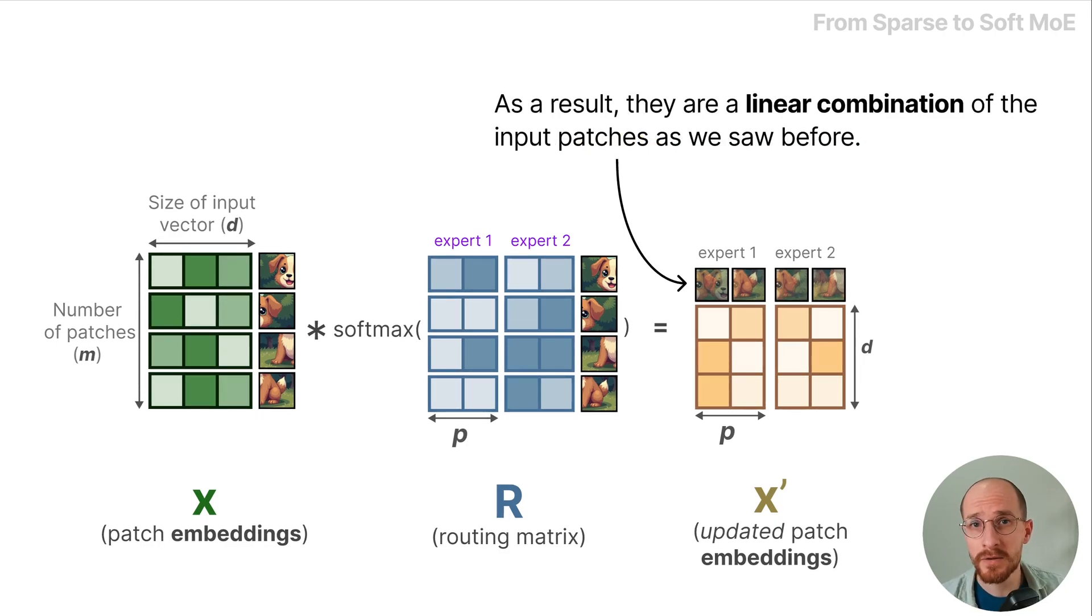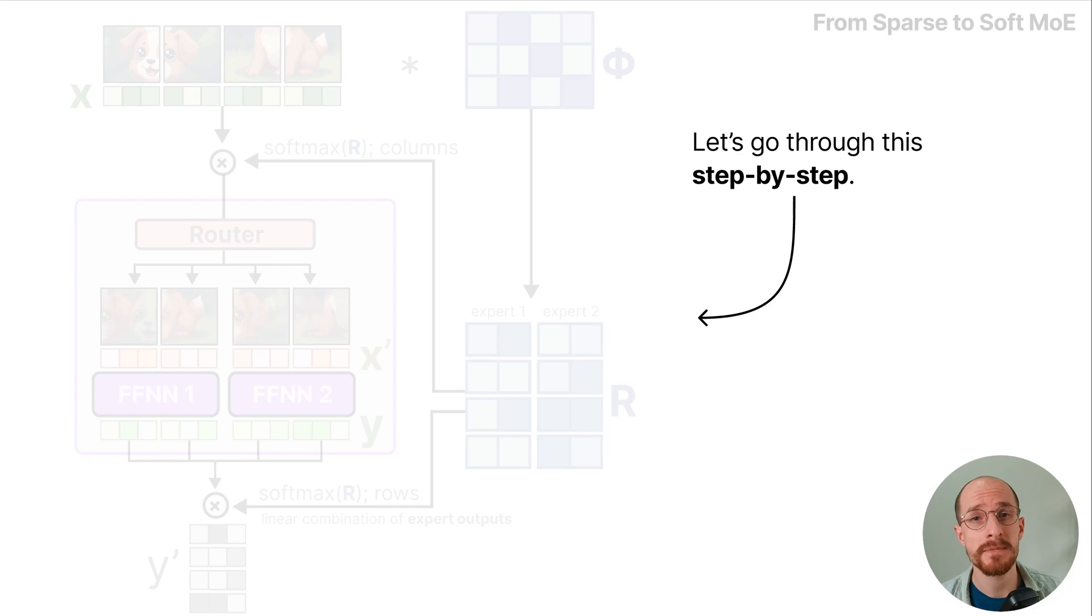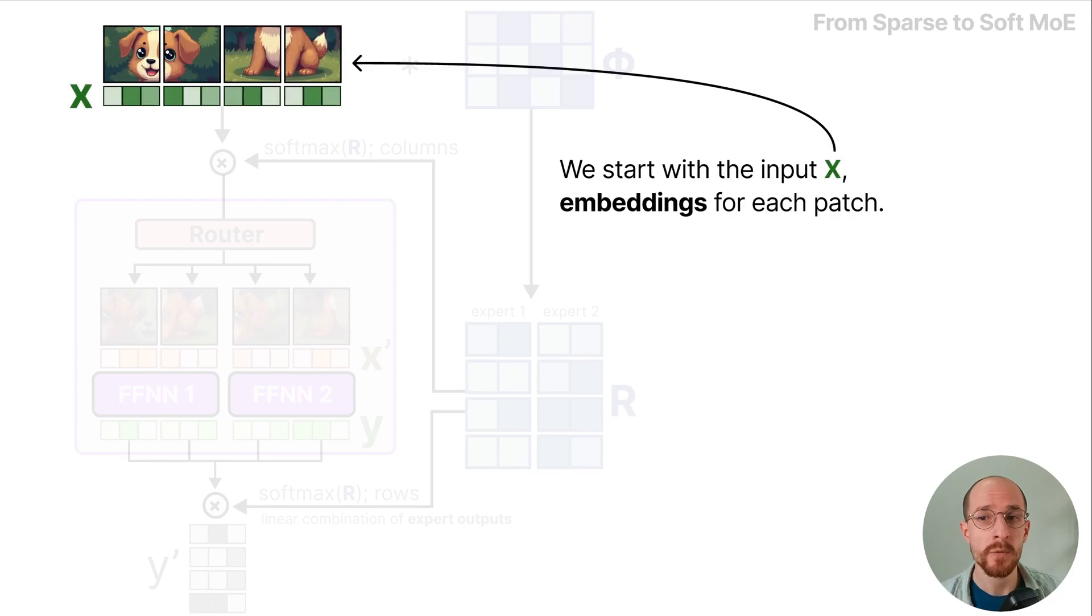And as a result they are linear combinations of the input patches as we saw before. And let's go through this step by step. We start with the input X, the embeddings for each patch, and multiply that with the learnable matrix phi.